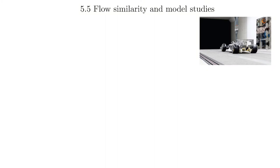Now we're at section 5.5 — flow similarity and modeling. We're going to use these dimensionless parameters to figure out exactly how we can make scaled models, using the similarity that comes with reducing problems to their dimensionless groupings and the minimum number of parameters needed. This makes it much easier to experimentally analyze fluid mechanics behavior — the forces generated on objects by the fluids they flow in. This is a very practically applicable section.